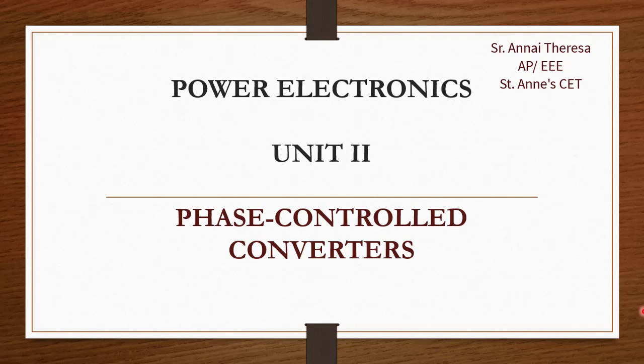In a diode rectifier, power flows only from input to output and it cannot be controlled. Fluctuation of power will occur naturally with the fluctuation of supply voltage and load. In many applications, power flow requires control to compensate for supply and load fluctuations, so we use a thyristor converter which can control the power flow by the phase control principle.